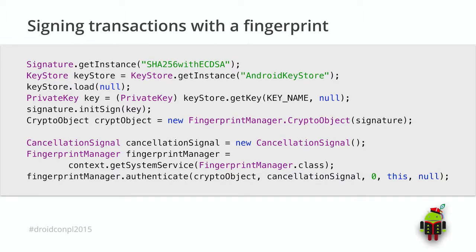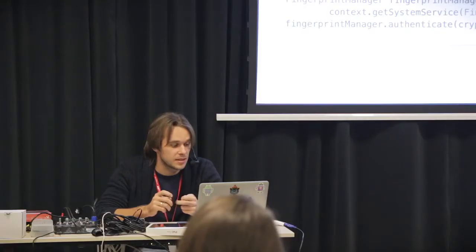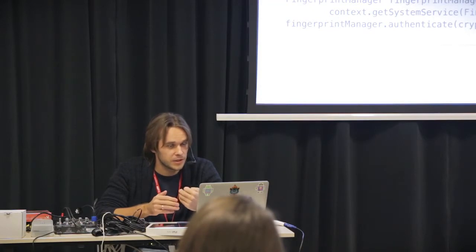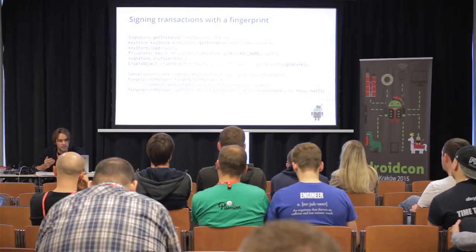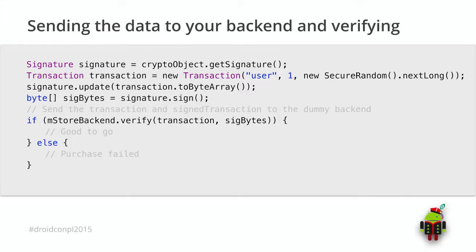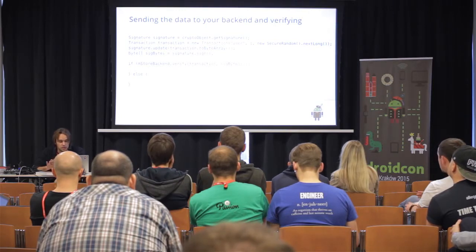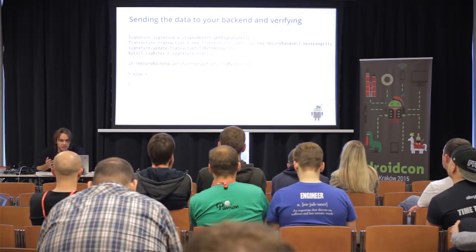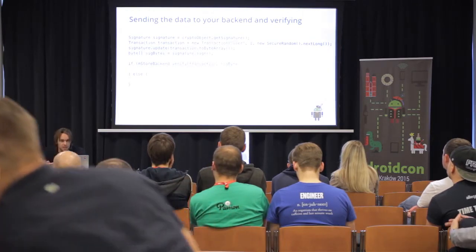To sign our data with the fingerprint: we initiate a process of signing using FingerprintManager, then listen for the result. When we receive a successful result, we will receive an encrypted object and a signature. Then we can create a transaction and send it to the server. After successful authentication of this transaction, the server will return another piece of data and we can validate that all is fine.